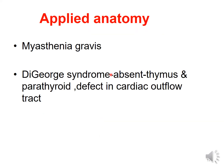Coming to the applied anatomy of the thymus gland: there is a condition called myasthenia gravis in which the thymus gland is involved. There is also DiGeorge syndrome, in which the thymus along with other endocrine glands and cardiac outflow tracts are defective; in DiGeorge syndrome, the thymus will be absent.